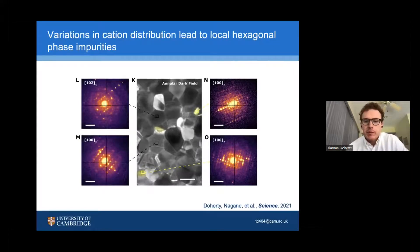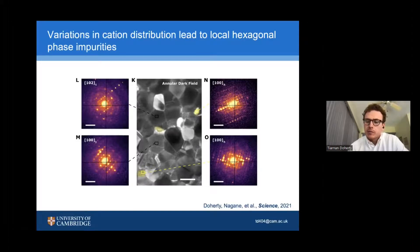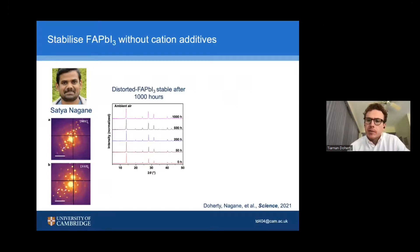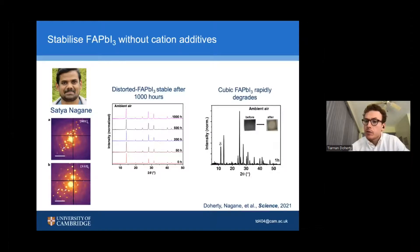The ultimate test of this hypothesis is that if all we're doing when we add in these cations is distorting the structure a little bit, then in principle we should also be able to distort the structure in other ways and form a distorted FAPI that is equally resilient to degradation as many cation-additive approaches. And that's exactly what my colleague Satya was able to do. He stabilized FAPI just by using a templating agent on the surface of the film — growing a distorted FAPI without any cationic additives — and this turned out to be remarkably stable for thousands of hours, compared to typical cubic perovskites which can degrade after only a few minutes, even in air.